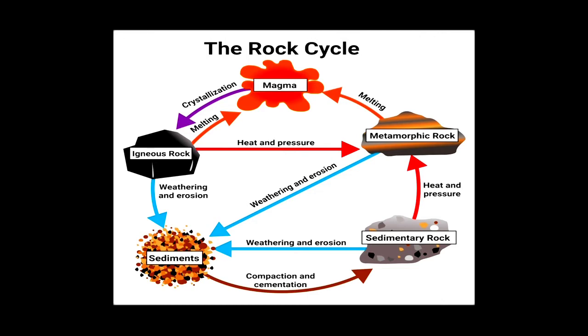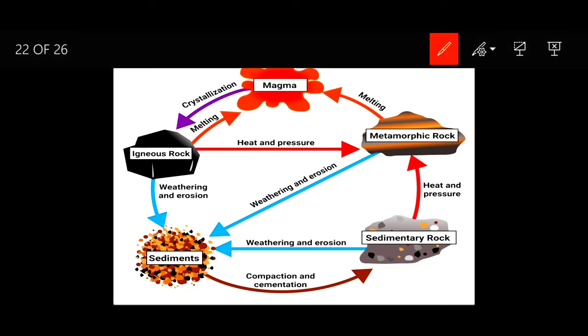It's very clear from this diagram. First take this magma. Magma when it is crystallized, it cools down to form igneous rock.